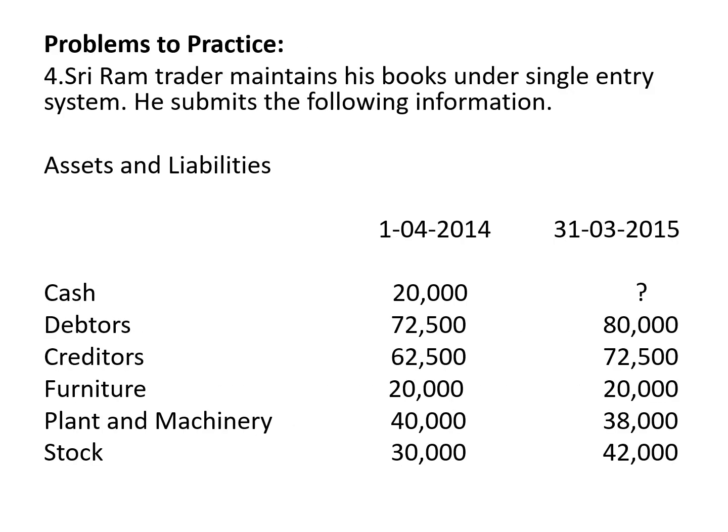The next question: Sriram, a trader, maintains his books under single entry system and submits the following information — assets and liabilities values opening and closing. Cash: opening balance 1st April 2014 is 20,000; closing balance 31st March 2015 is a question mark — we will have to find the closing balance of cash by preparing the cash account. Opening cash goes to the opening statement of affairs and cash account. Debtors: opening balance 72,500, closing balance 80,000 — opening debtors go to opening statement of affairs and debtors account.